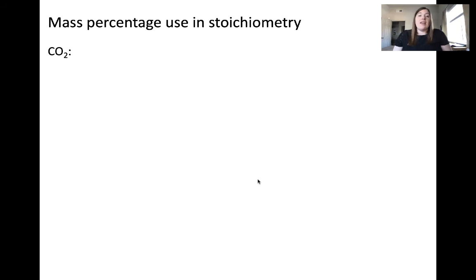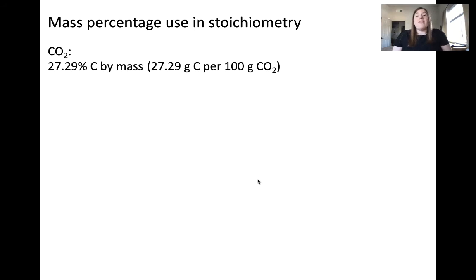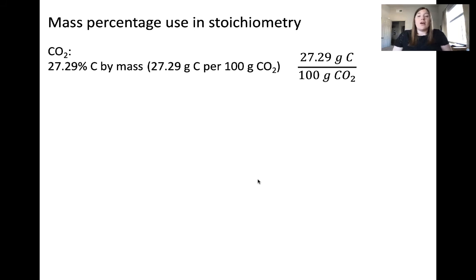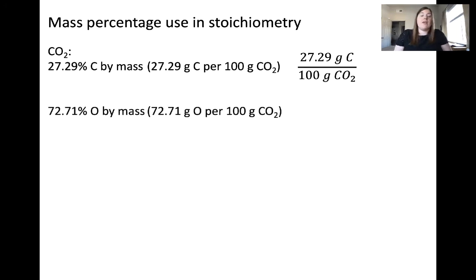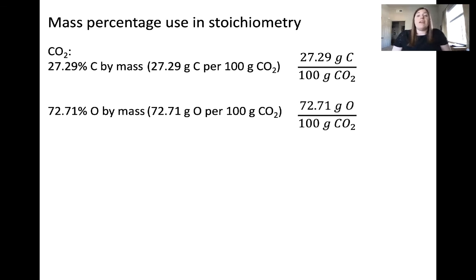Let's apply this to a stoichiometry problem. What our mass percentages mean — for example, 27.29% carbon by mass — is that in every 100 grams of CO2 there are 27.29 grams of carbon. This is the meaning of a mass percentage, and it can be written as a ratio: 27.29 g carbon per 100 g CO2. For oxygen, 72.71% oxygen by mass means that for every 100 grams of CO2 there are 72.71 grams of oxygen, expressed as a similar ratio.